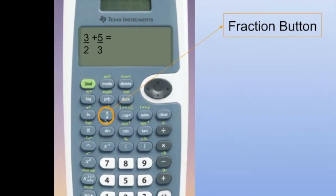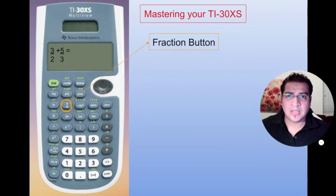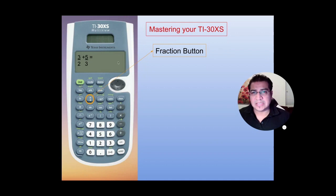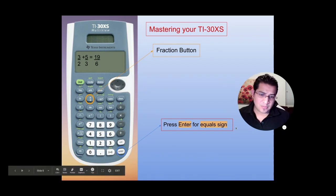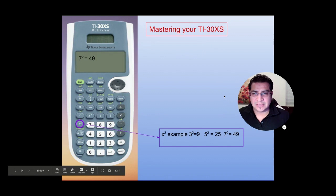This one is one of the most important ones, which is the N over D button, which is a fraction button. So you can do operations like 3 over 2 plus 5 over 3, which will give you 19 over 6. Of course, you'll press enter again, which is the same as the equal sign.